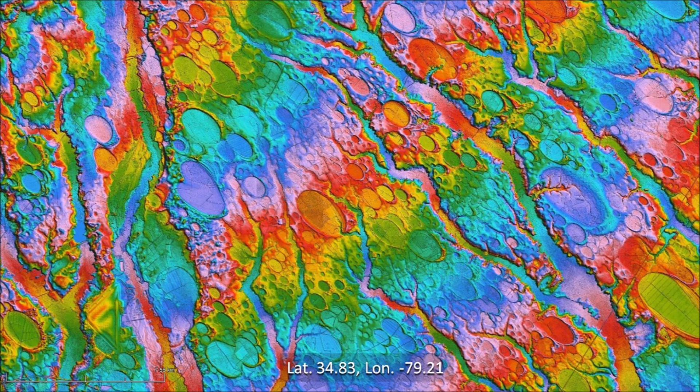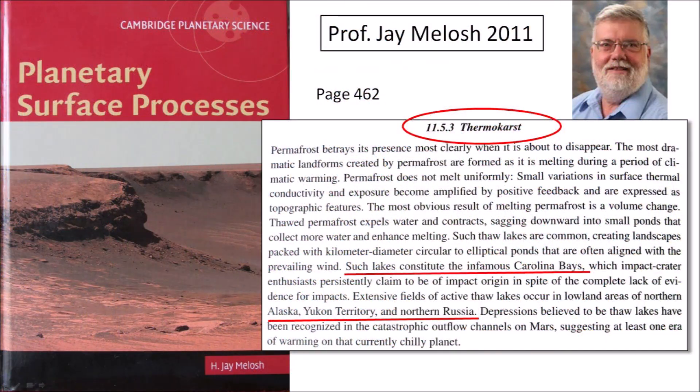Even basins that have been heavily eroded retain some of the characteristic features. The book Planetary Surface Processes, published in 2011 by Professor Jay Melosh, classifies the Carolina Bays as thermokarst lakes that are often aligned with the prevailing wind. The Carolina Bays are mentioned in the context of active thaw lakes found in northern Alaska, Yukon Territory, and northern Russia. These thaw lakes are formed during periods of climatic warming when melting permafrost causes the land to sag and create sinkholes that fill with meltwater.